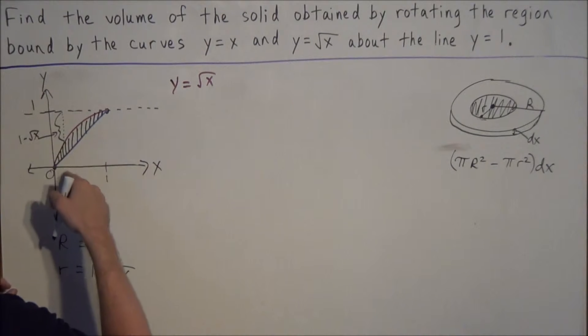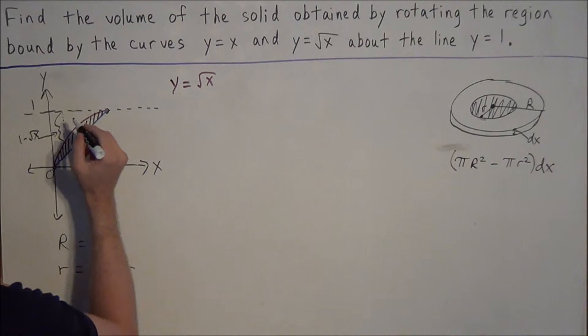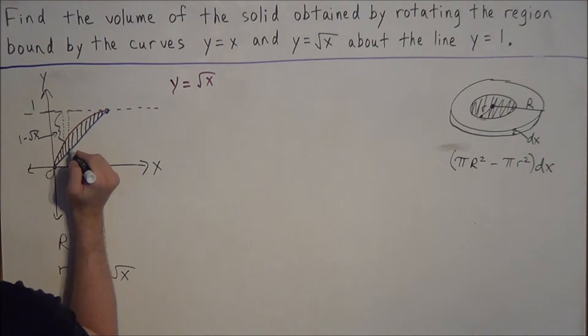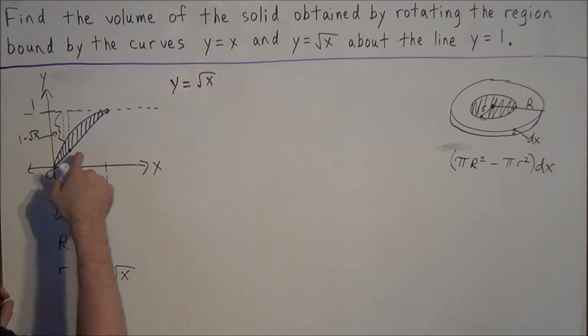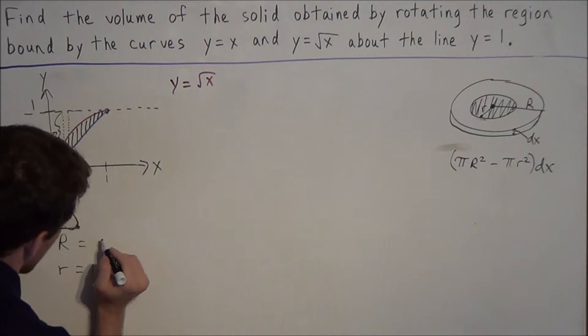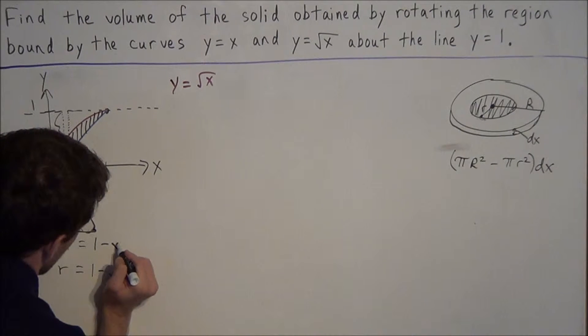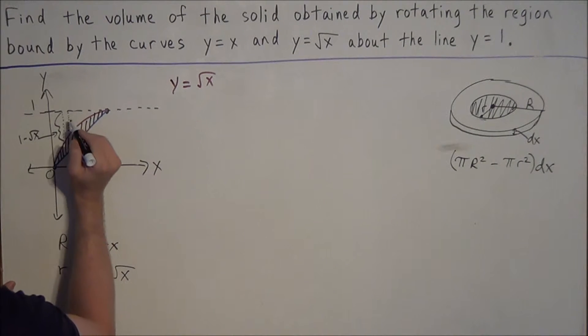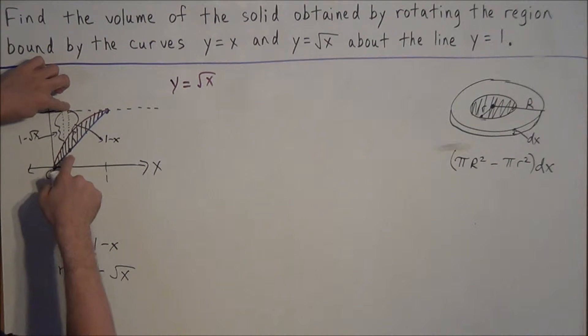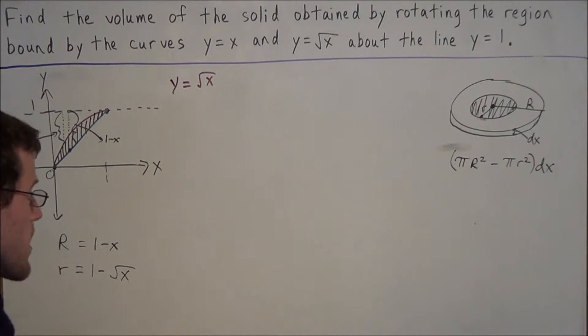And now similarly, we need to find this capital R, or the outer radius. So once again, we can drop down a perpendicular line, and it's going to hit the equation y equals x, so the distance between the line and the equation y equals x can be characterized by 1 minus x. So this space in here, you can draw it out there, is 1 minus x. That's the space between this line and the graph of y equals x.